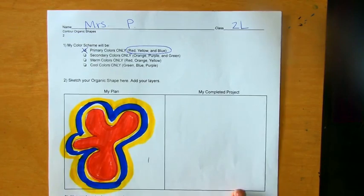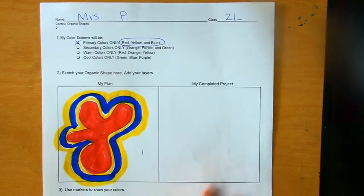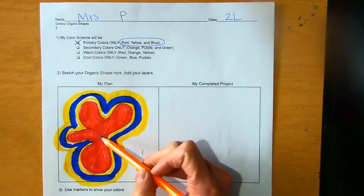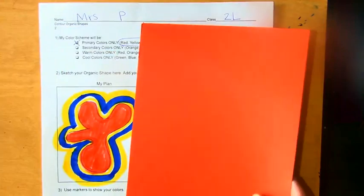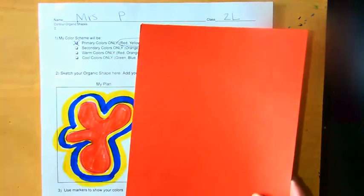So the first thing you're going to need to do is have your paper back out that you planned on, and I'm going to come around and look at what color you have in the middle, because that's going to be the color you're going to start with today. And I'm going to give you a piece of paper that matches that color. So mine is red. I would get a red piece of paper.